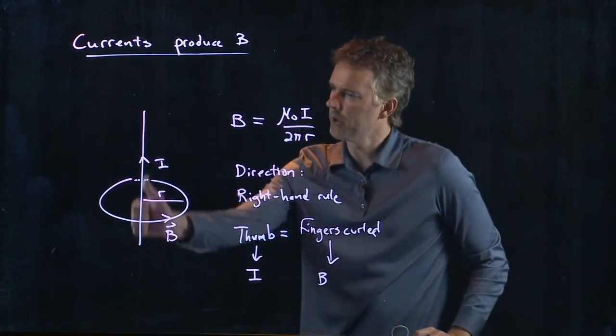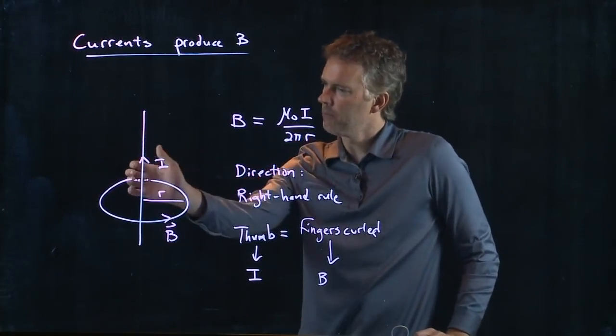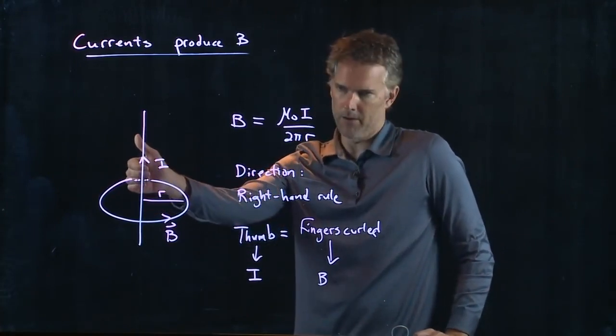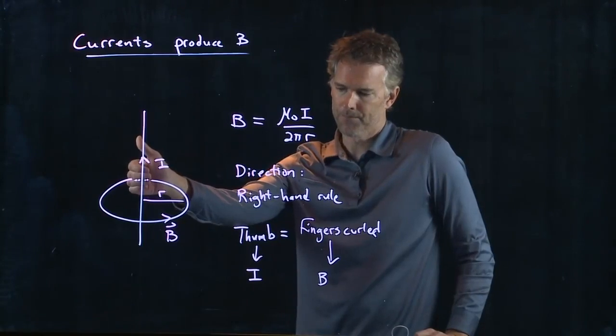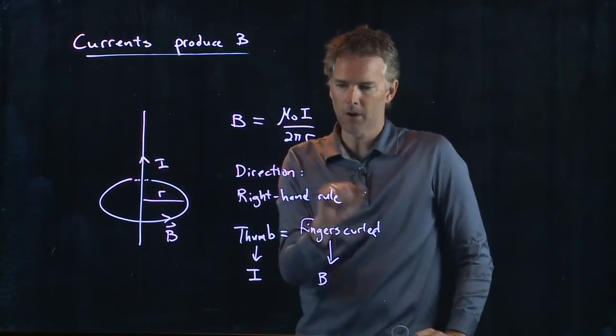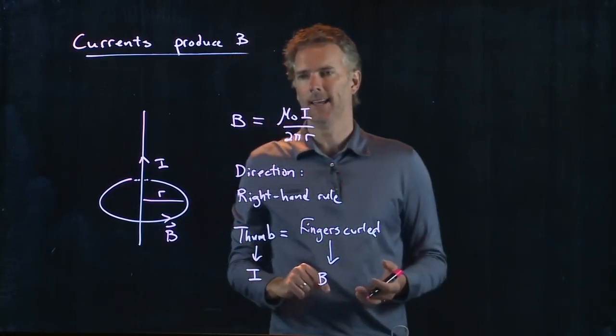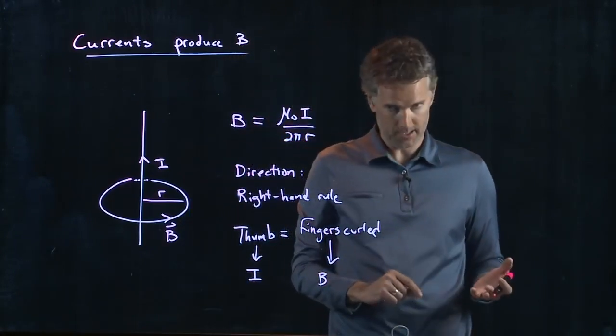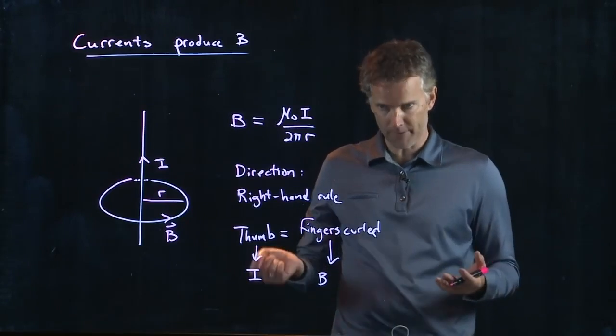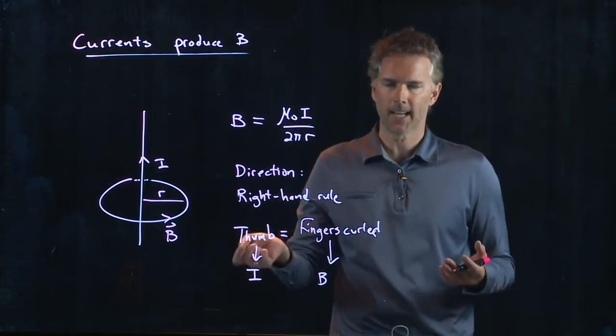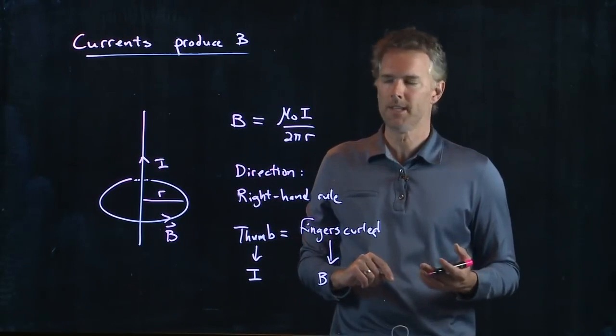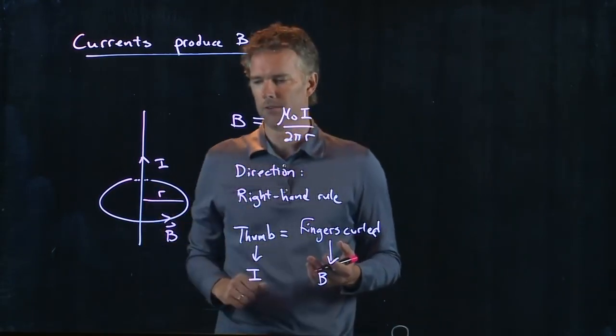So my thumb is going up in the direction of the current, my fingers are wrapping around in the direction of B. We call this the right-hand rule for a reason. It works with your right hand, it doesn't work with your left hand. If you do your left hand, you will get the exact opposite of what you intended. So you have to use your right hand to do it.